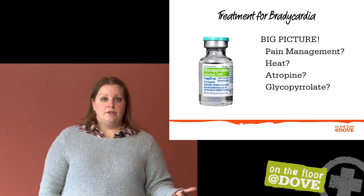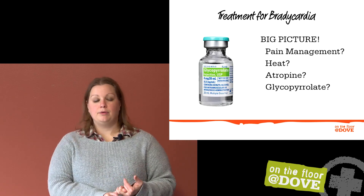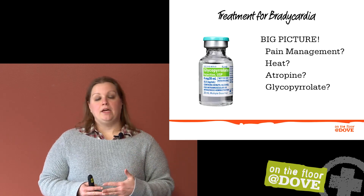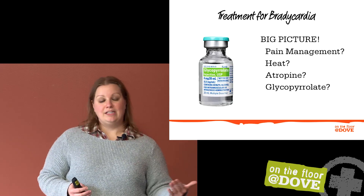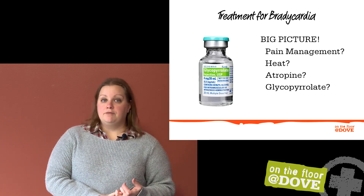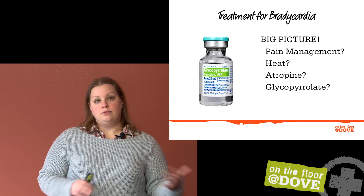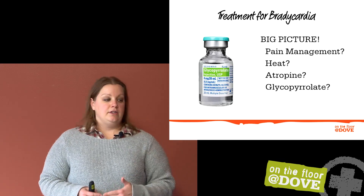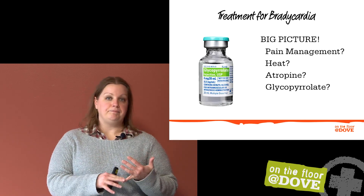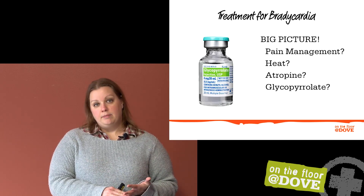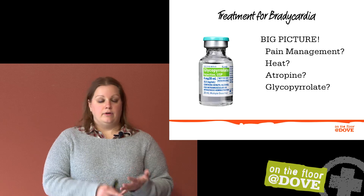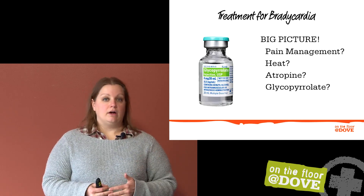You can also treat bradycardia with drugs. Atropine and glycopyrrolate are both anticholinergic drugs, so they're going to increase the heart rate. Atropine works more quickly and wears off more quickly. Glycopyrrolate takes a little longer to kick in but also lasts longer. Depending on drug availability and the procedure, that will help you choose which to use. But remember, there's no such thing as a benign drug — if you can treat bradycardia by lowering the gas or warming the patient, that's ideal. More commonly, though, we're reaching for atropine or glycopyrrolate for these patients.